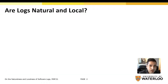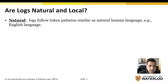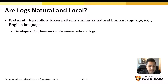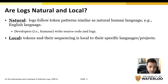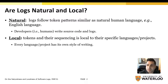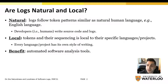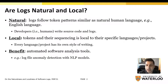In this research, our main hypothesis is: are software logs natural and local? Our research is in the area of Natural Language Processing, or NLP for short. Natural means that logs follow similar token patterns as natural languages, such as English, as they both are applied by humans. Local means that the appearance of tokens or words can be specific to their corresponding languages and projects. The benefit of our research is that these defined NLP attributes can be leveraged for automated log analysis, such as anomaly detection.